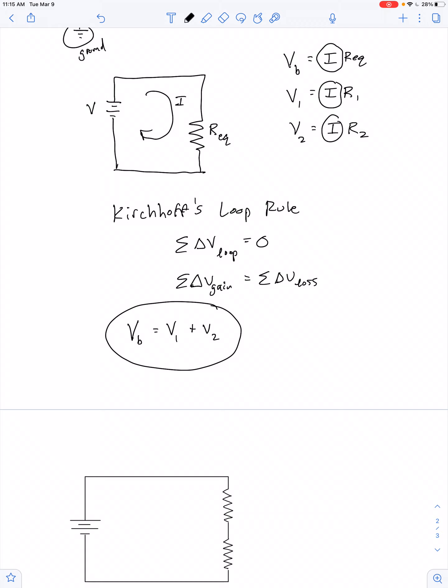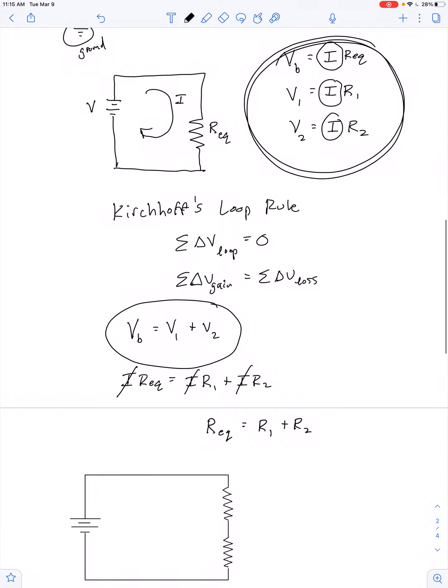Well, if I take that along with these expressions from Ohm's Law, then we have I times R equivalent equals I times R1 plus I times R2. Since that represents one singular amount of current, we can divide it out of the equation, and we get the result we expected. When resistors are connected in series, the equivalent resistance is just equal to the sum of the two resistors.